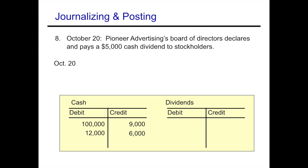On October 20th, Pioneer Advertising's Board of Directors declares and pays a $5,000 cash dividend to stockholders. We debit dividends for $5,000 and credit cash for $5,000. Some companies don't use a dividends account at all and simply debit retained earnings directly. If you forego the dividends account, retained earnings will already reflect the amount paid out in dividends at year-end. We move this to the T-account, debiting dividends and crediting cash for $5,000.